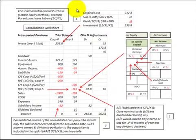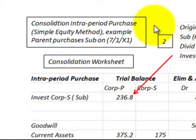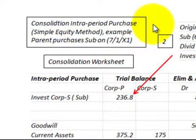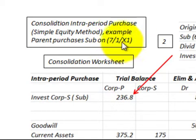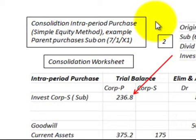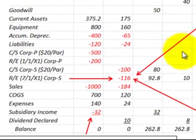Here we're going to be looking at a consolidation for an intra-period purchase using a simple equity method. This is where the parent is going to purchase the subsidiary on 7-1, or July 1st of year X1, so they're making a mid-year purchase during the year. This is what we have to look at when doing this consolidation for the intra-period purchase, and there are key points we have to be concerned with.